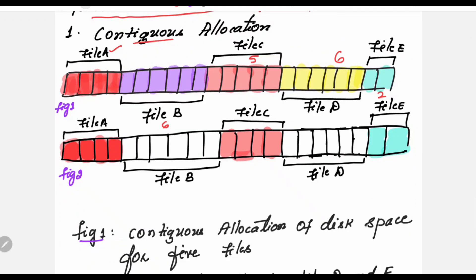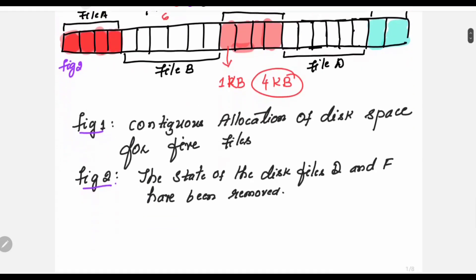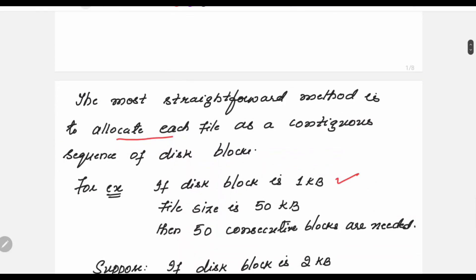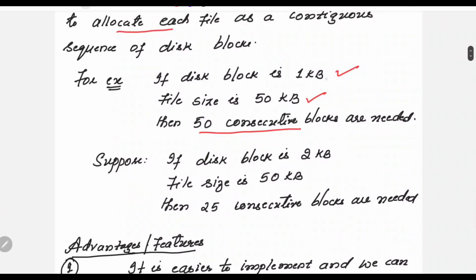Why are four blocks allocated? It depends on the size of the file. If the block size is 1 KB and the file size is 4 KB, you need four blocks to store the file. For example, if the disk block is 1 KB and file size is 50 KB, then 50 consecutive blocks are needed. If the block size is 2 KB and file size is 50 KB, then 25 consecutive blocks are needed. This is how files are stored in contiguous allocation.